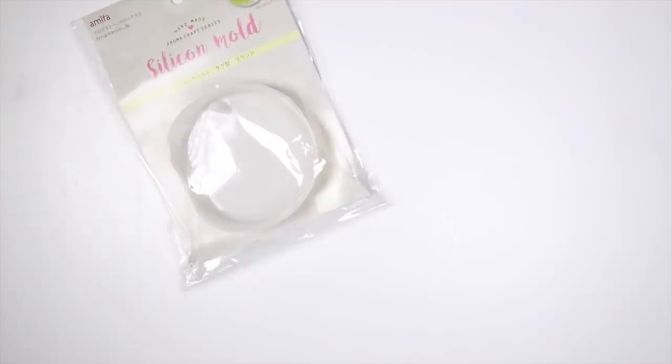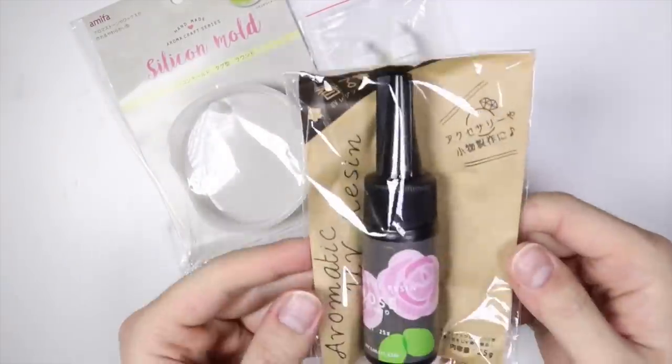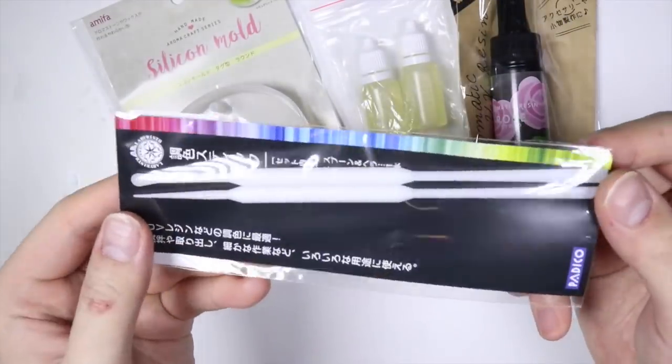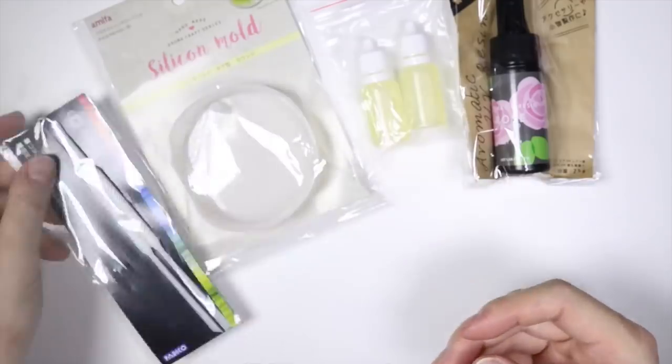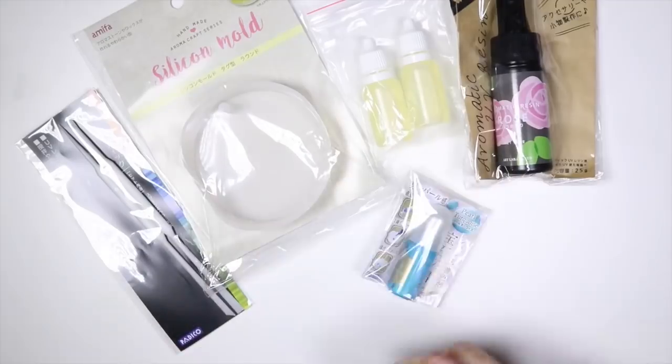So it comes with the silicon mold and it looks like these are some aromas. Here is some aromatic UV resin and it smells really good. Some silicon resin tools. Here's turquoise pigment that's all pearly.